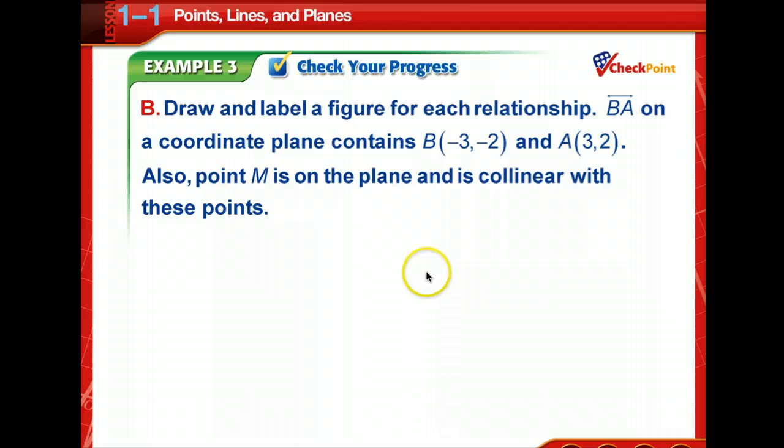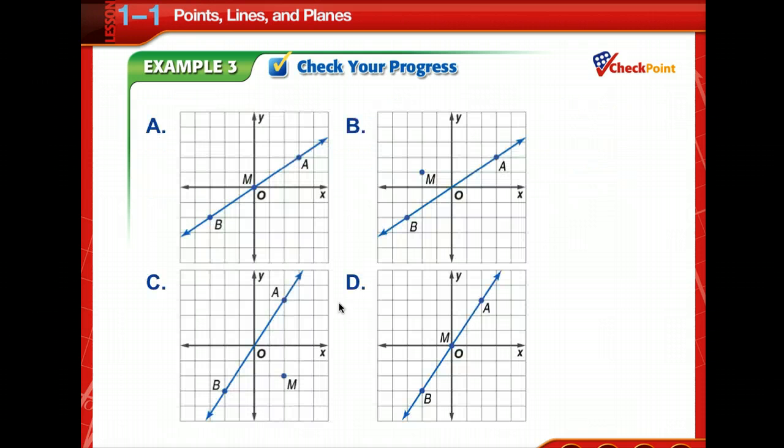Now we're to draw and label a figure for each relationship. Okay. So we've got line BA on a coordinate plane. How about you take just a moment to write these down. Note the important information that's in this word problem. Because when I go to the next slide so that you can actually look and choose, you're going to lose this information. So make a quick note. So pause it. Make a quick note that way you're ready for the next slide.